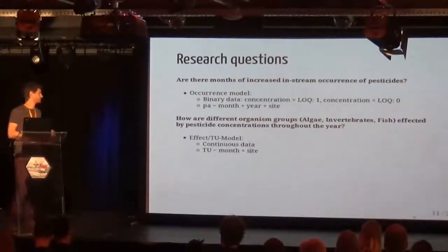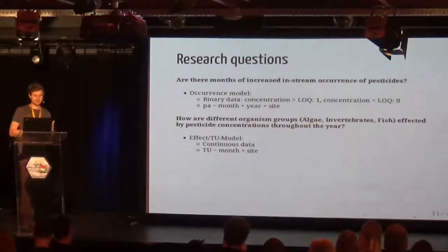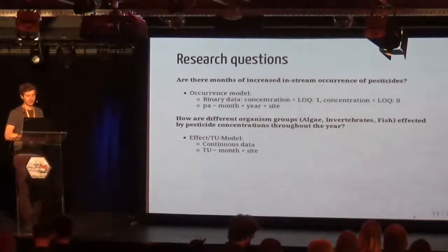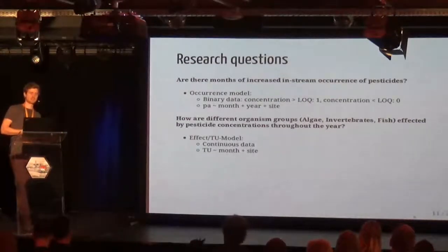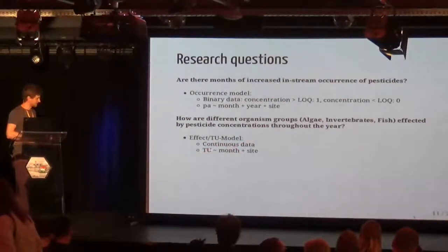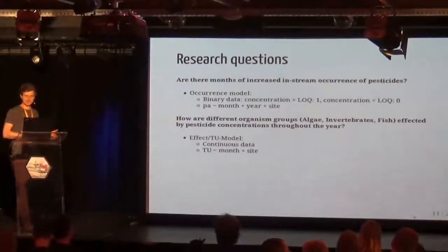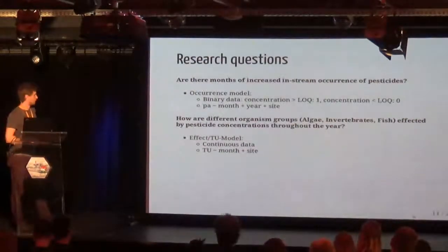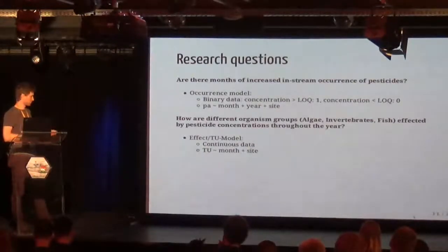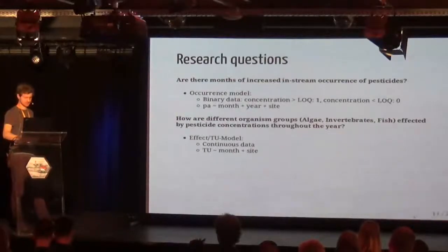The second question was: how are the different organism groups — algae, invertebrates, fish — affected by pesticide concentrations throughout the year? Here we use the toxic units shown before to model this continuous, normally distributed data, modeling toxic units in response to month and sites.